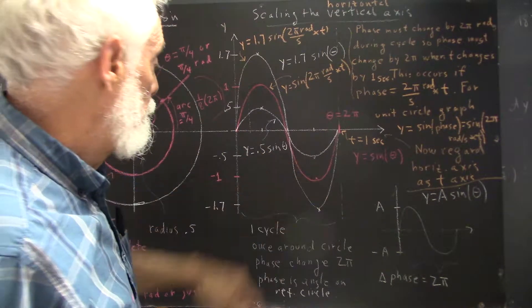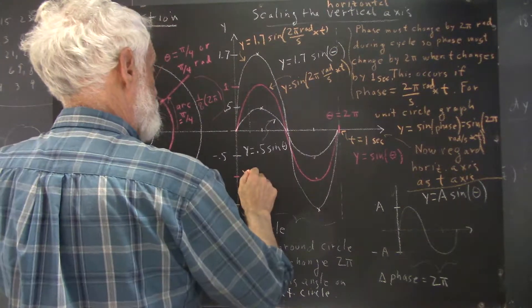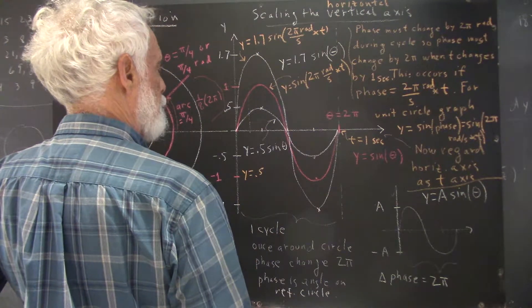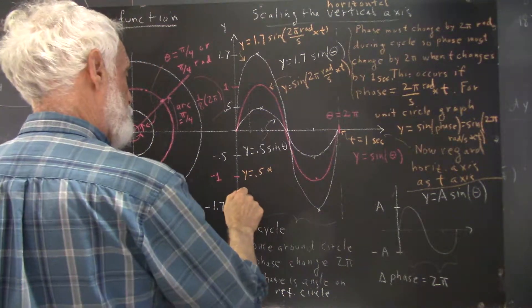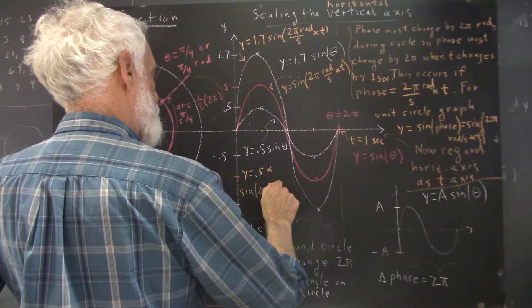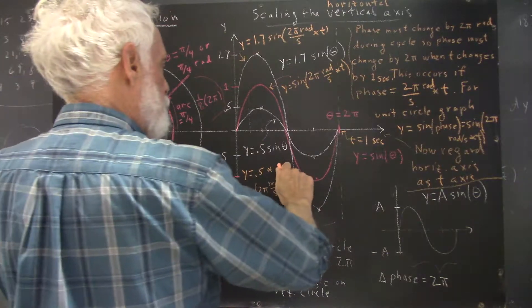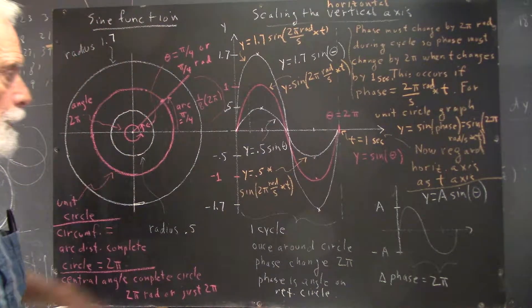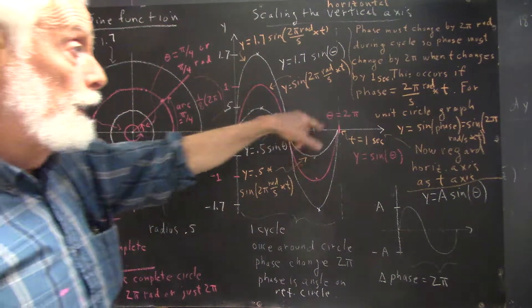I'll bet you can write the equation for this graph, so while I'm writing it, you think it through. It's 0.5 times the same function, times the sine of 2π radians per second times t. That's going to be the function that corresponds to the white graph of lesser amplitude.